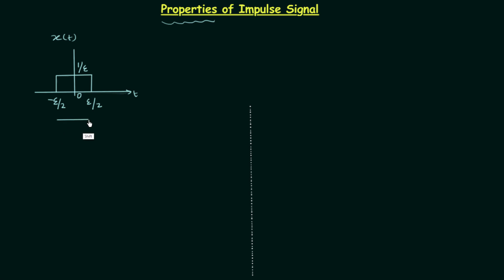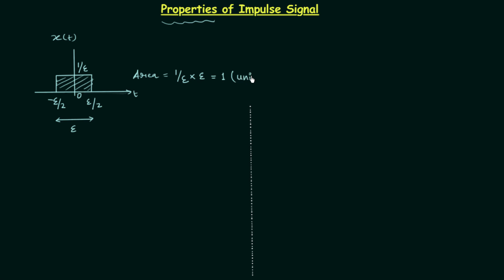If you see this duration — the duration for which signal value is finite — you will find it is epsilon by 2 minus minus epsilon by 2, so in total we have epsilon. If you want to calculate the area of this signal, the area is equal to height into width. Height is equal to 1 by epsilon, multiplied by the width which is epsilon. So area is equal to 1, and signal x(t) is a unit area signal.